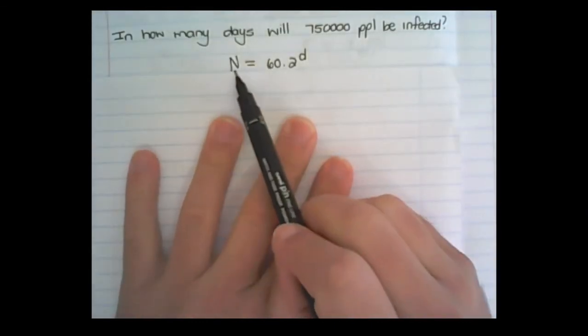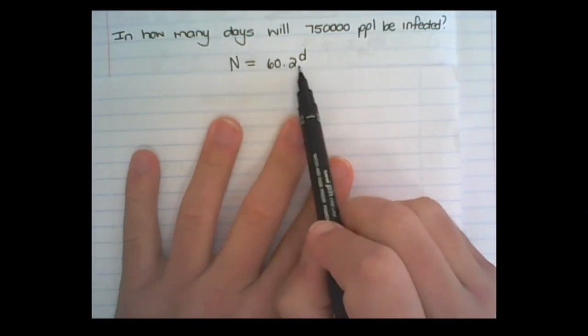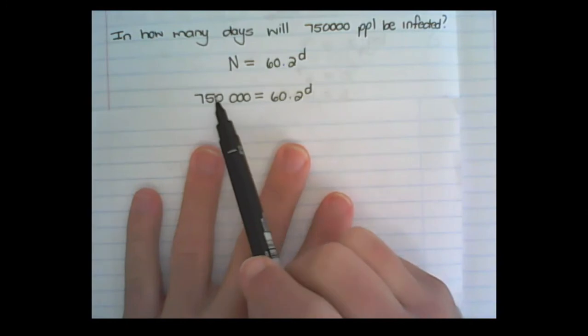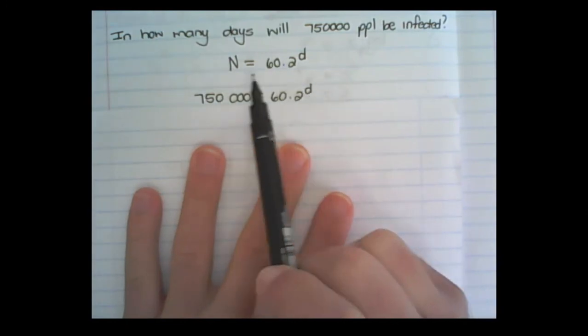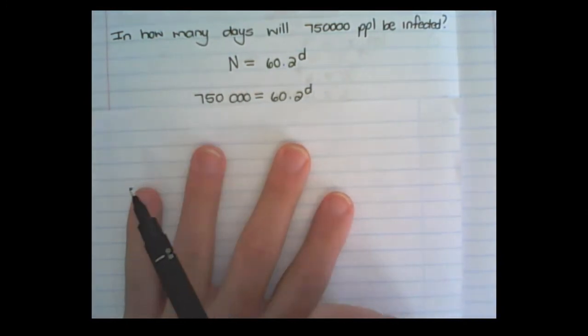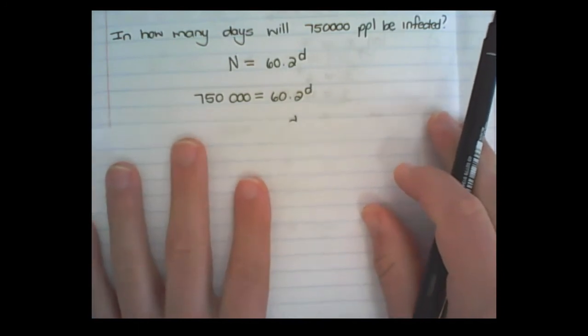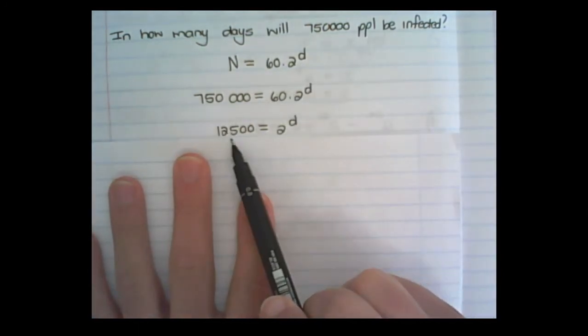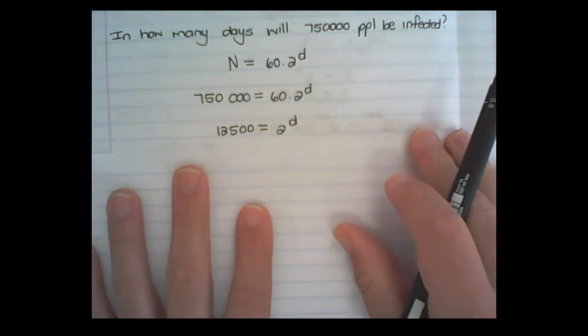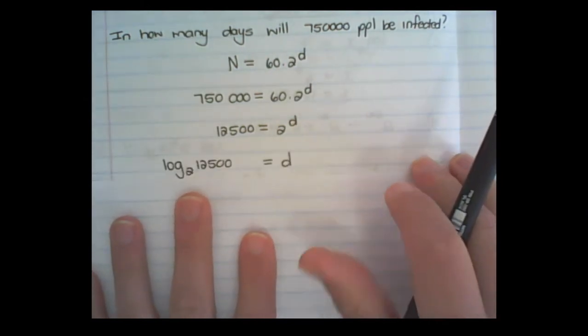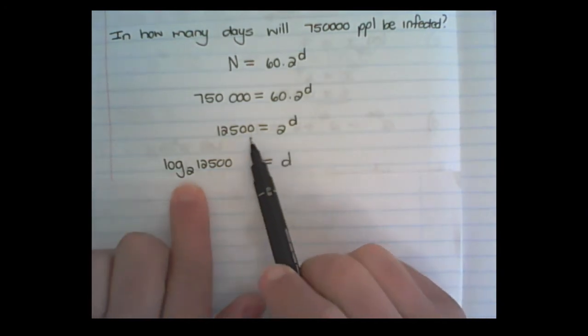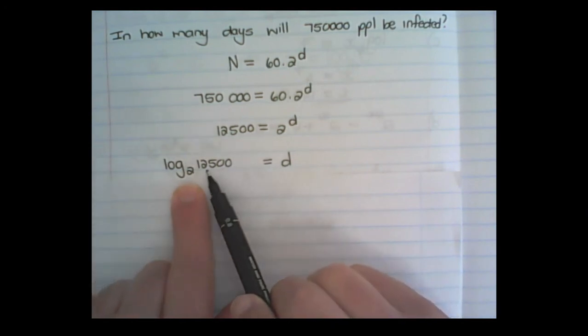So this is what we do. We have the equation given by the researcher. We want to figure out how many days it will take to get to 750,000 people. We can simplify this by dividing both sides by 60. And now, I find d by making 2 the base of the log, and 12,500 the argument.